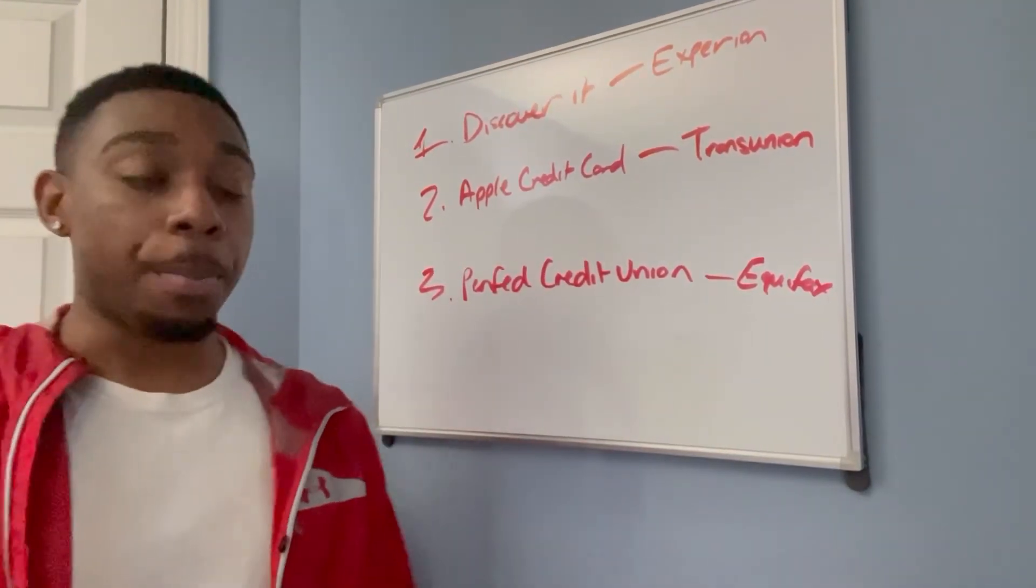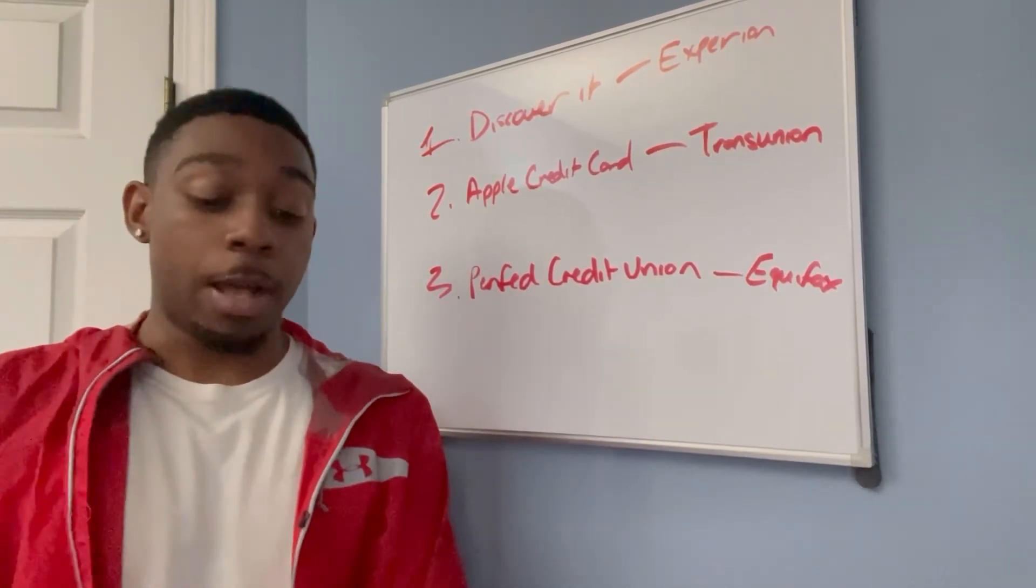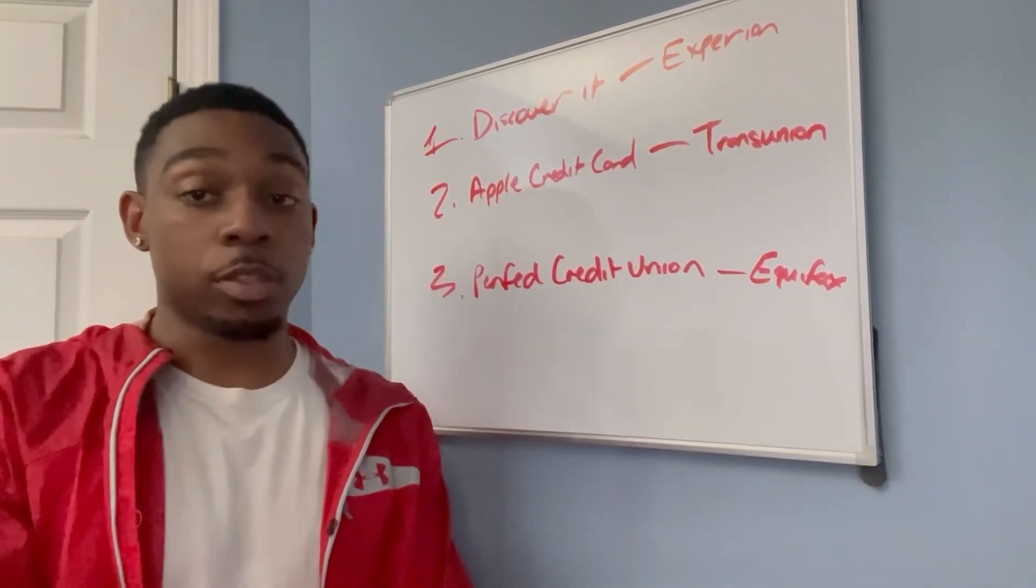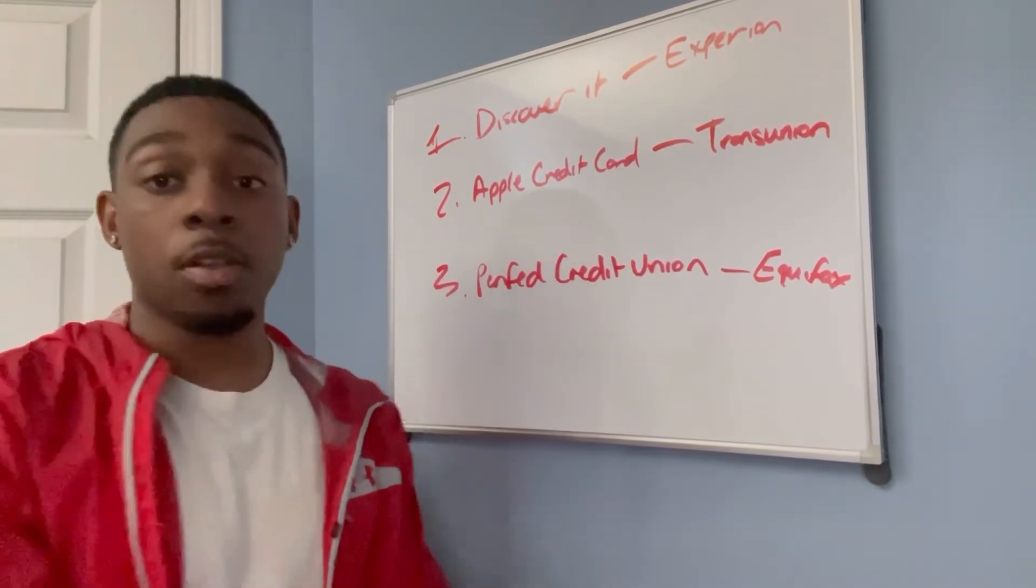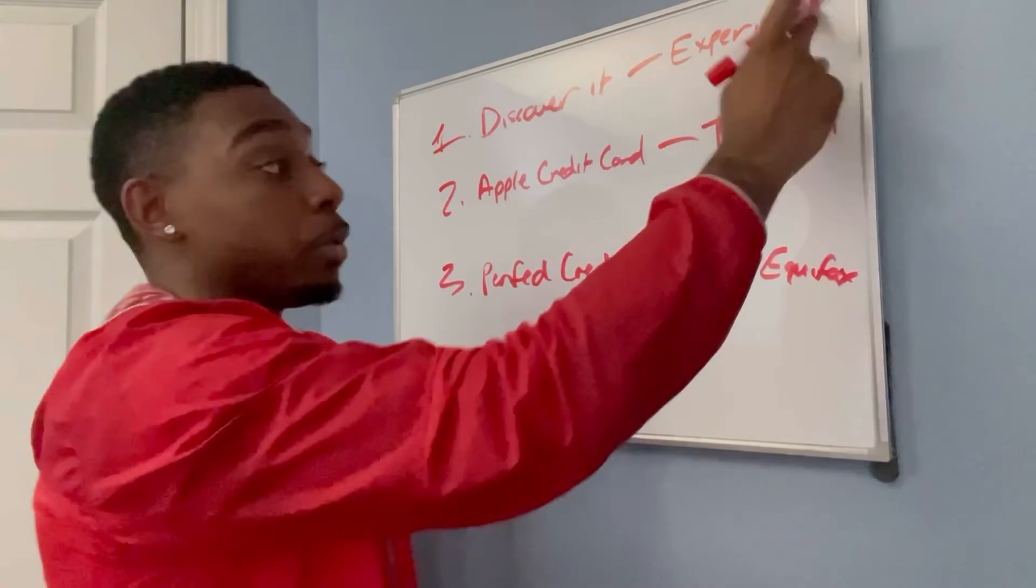So instead of aimlessly just applying for credit cards, I need to know what lender—bankers, credit union—I need to know what lender pulls from which bureau. And then just pick three that pull from three different bureaus.